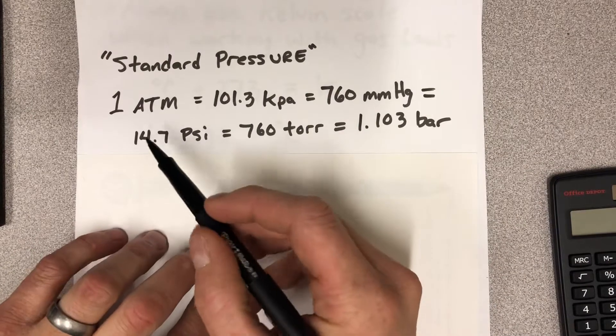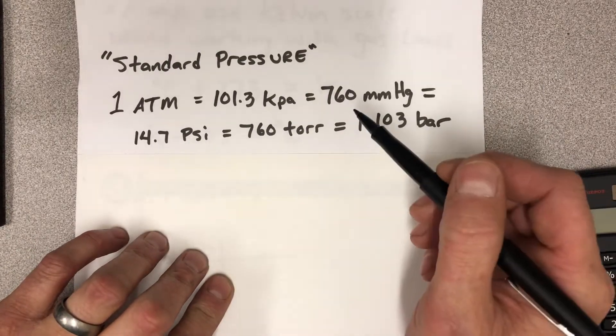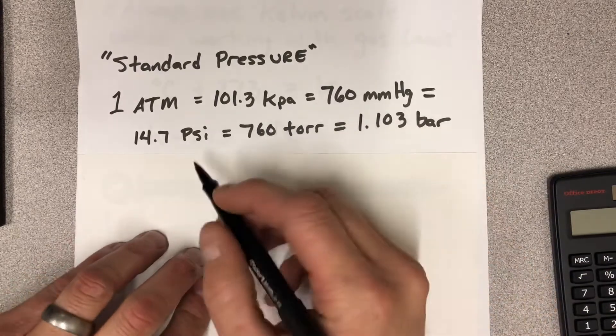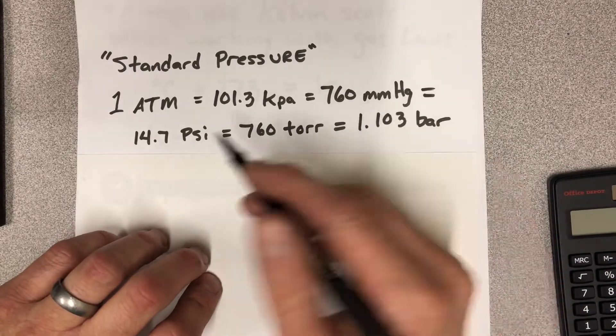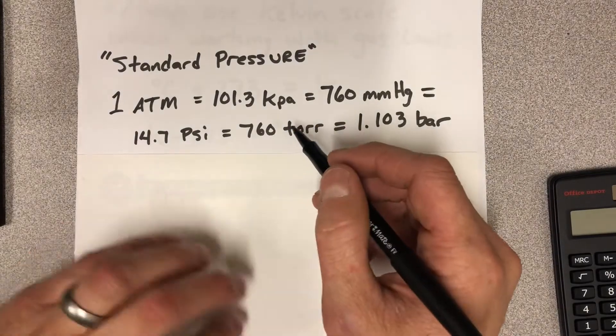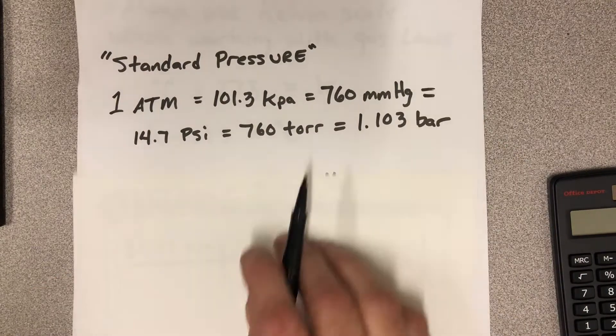The ones we use the most are probably atmospheres and kilopascals and millimeters of mercury. But anyway, these are all equivalent amounts of pressure and they all just equate to each other. And so you can use these as conversion factors when you need to go between different pressure units.